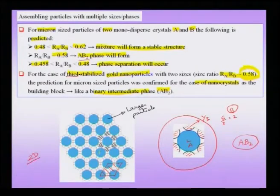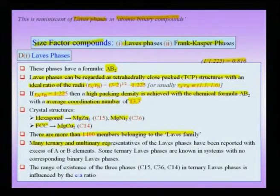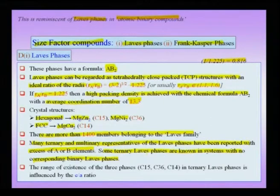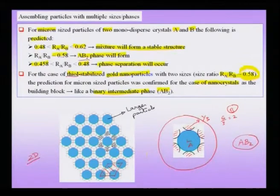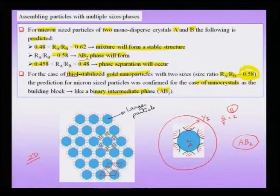Many ternary and multinary Laves phases have also been reported with excess of A or B elements, and some ternary Laves phases exist in systems with no corresponding binary Laves phases. To summarize: when nanocrystals of two sizes are taken, one may see phase separation or form a well-defined ordered superlattice structure with AB₂ stoichiometry, which is observed when R_A/R_B is around 0.58.